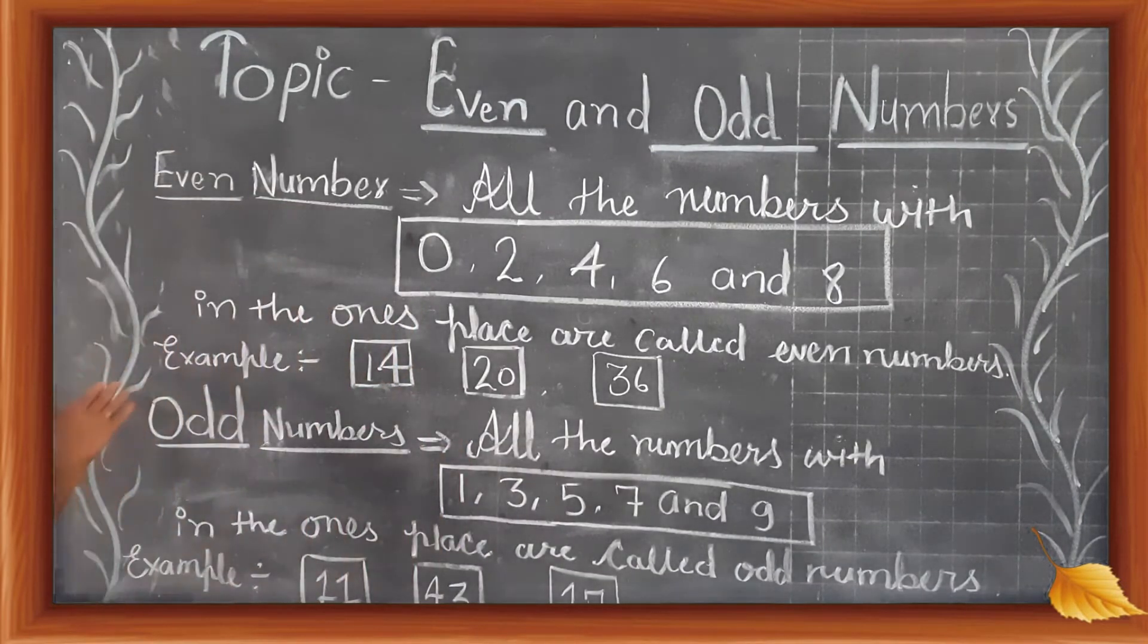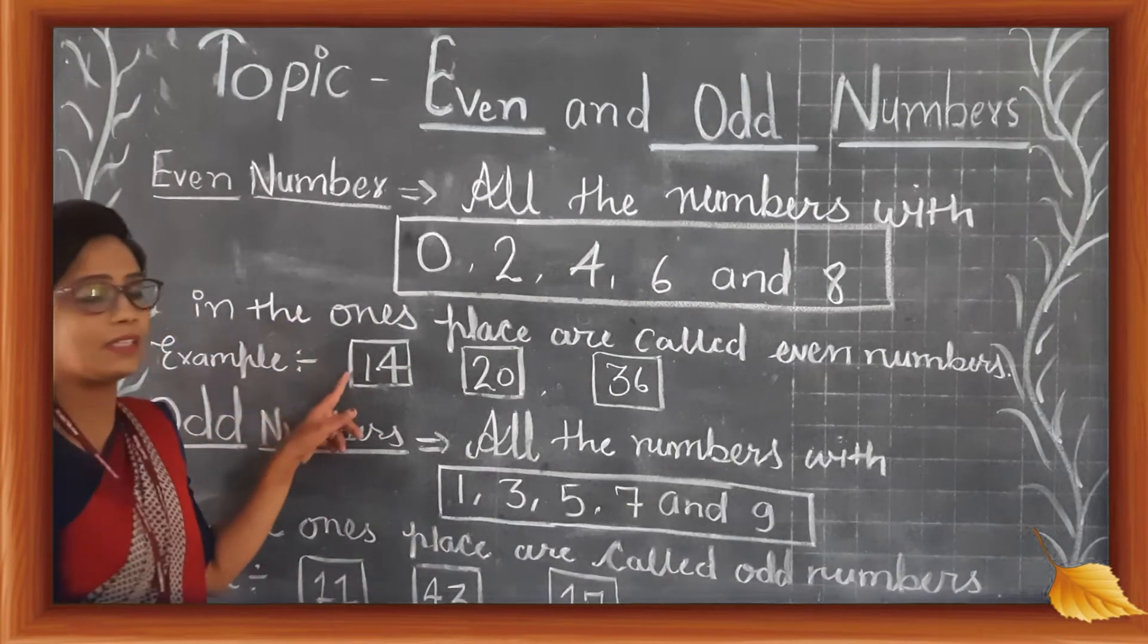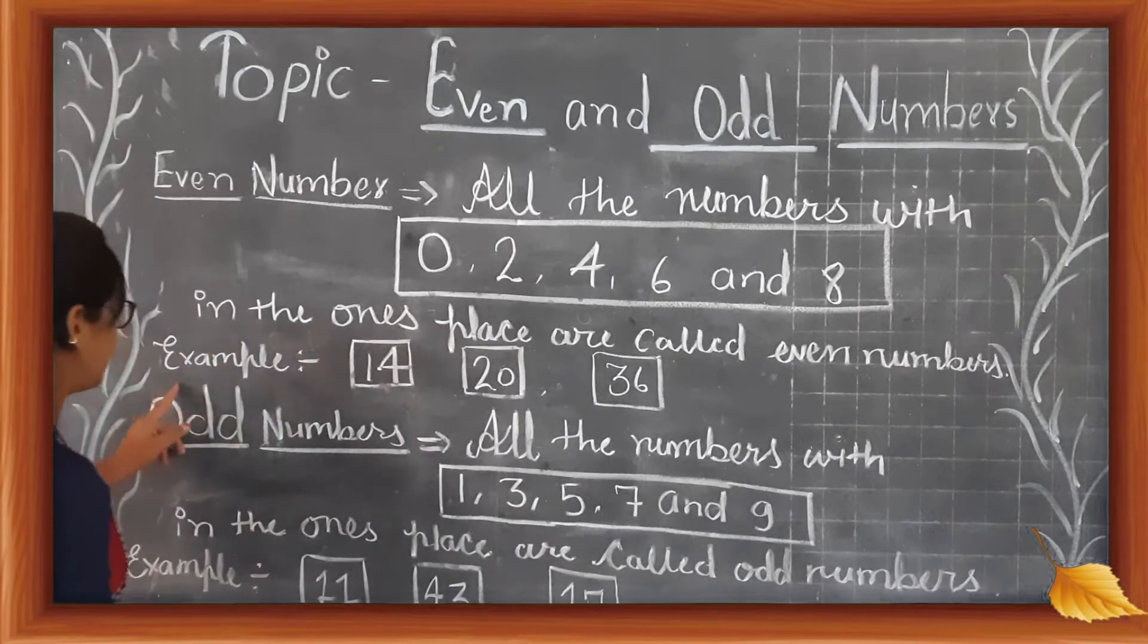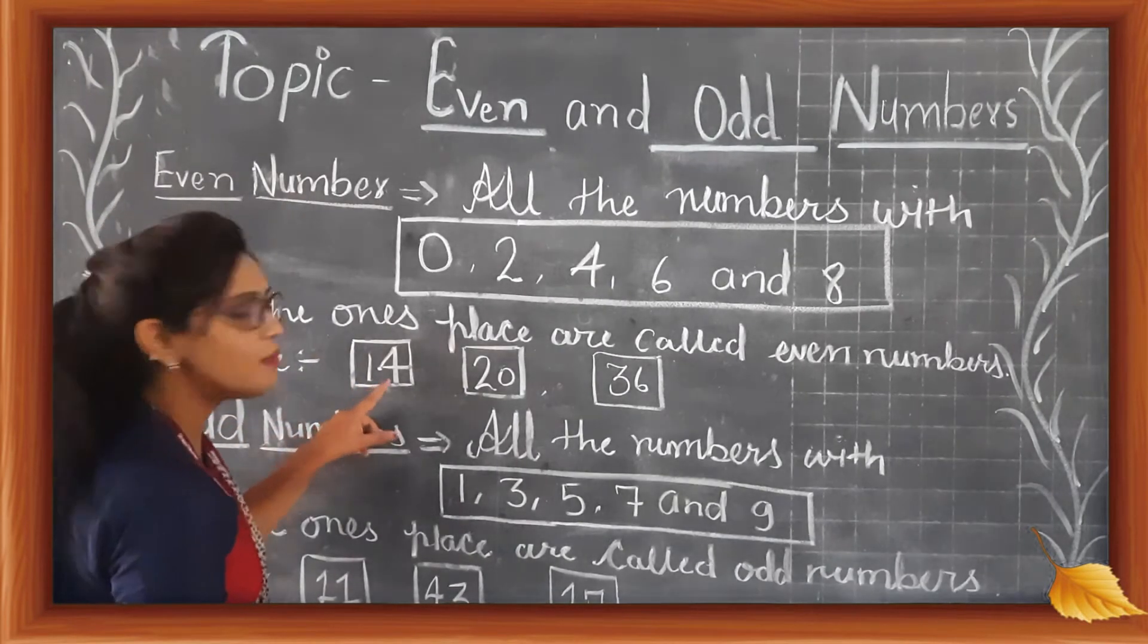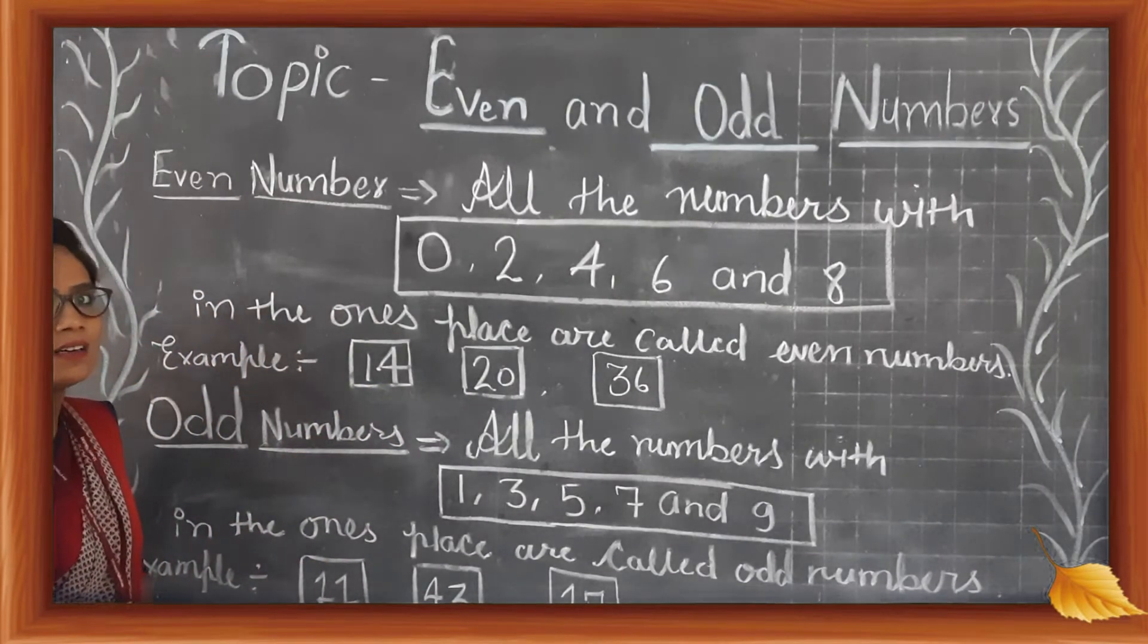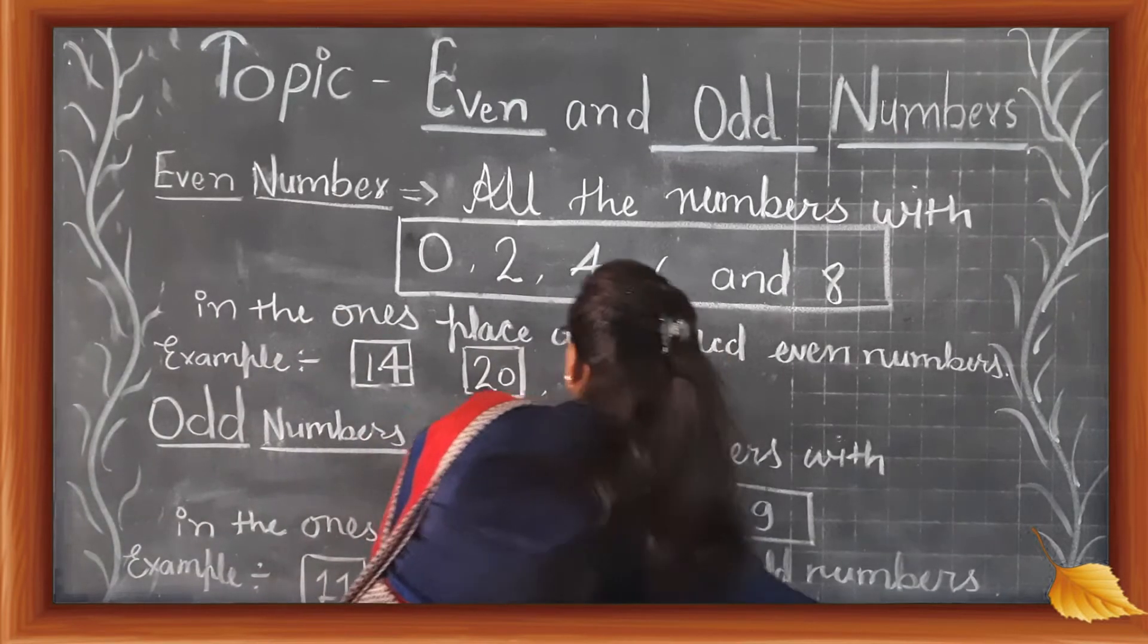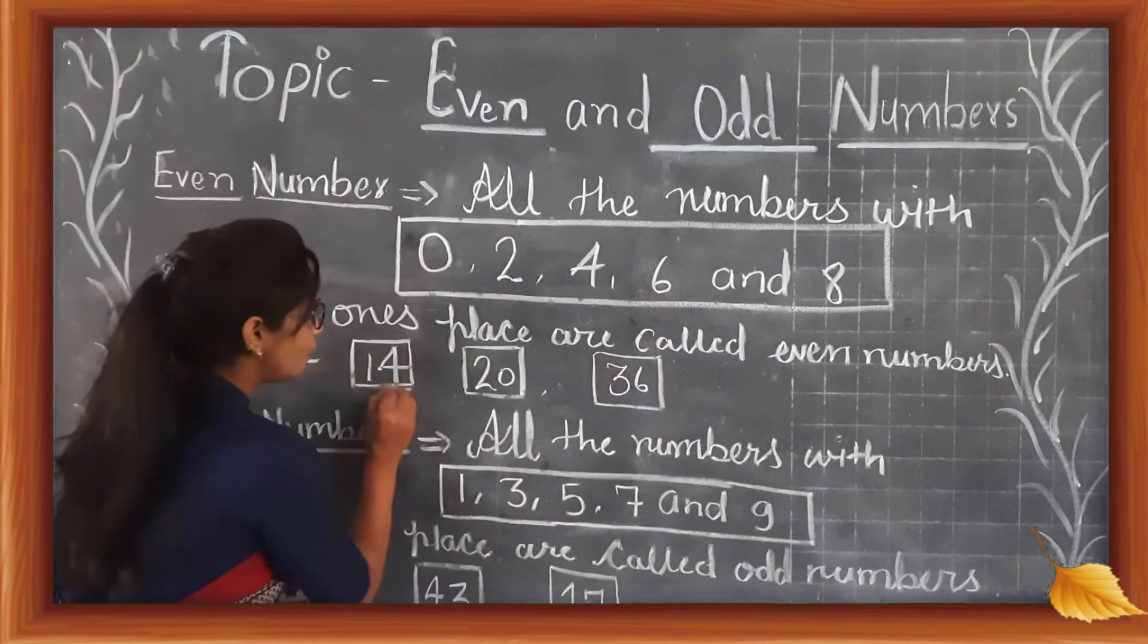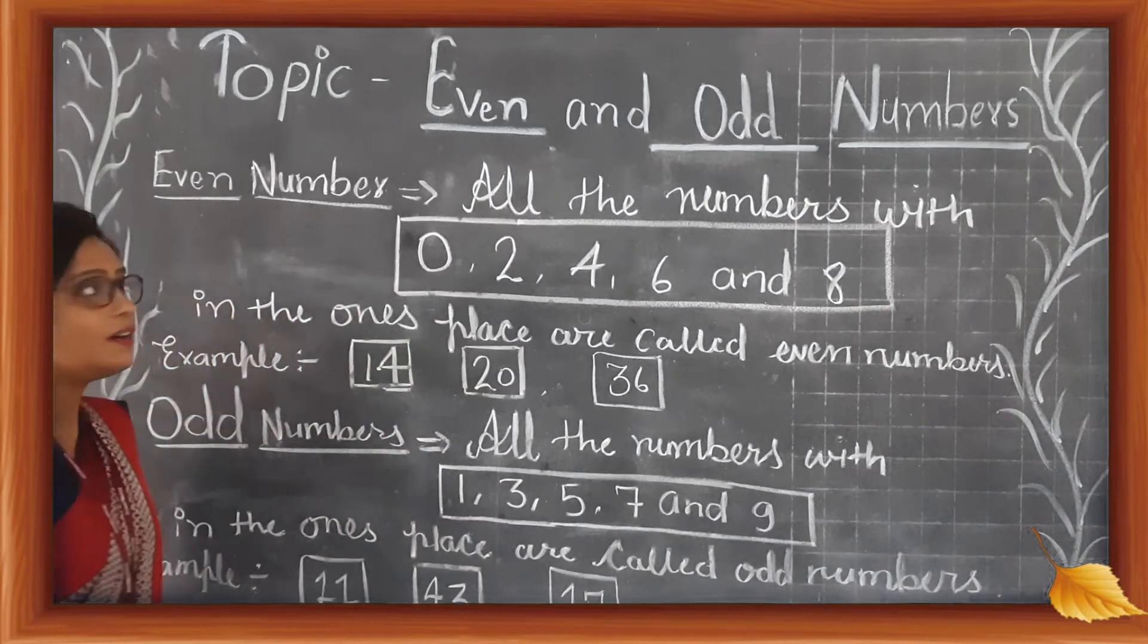Let's see example 14. Here 14 has 4 in the ones place. So 14 is an even number.